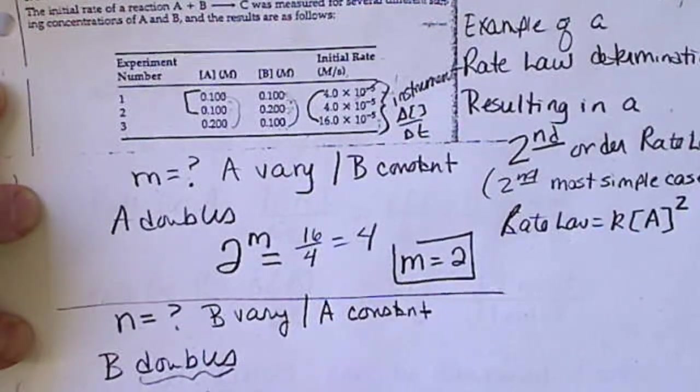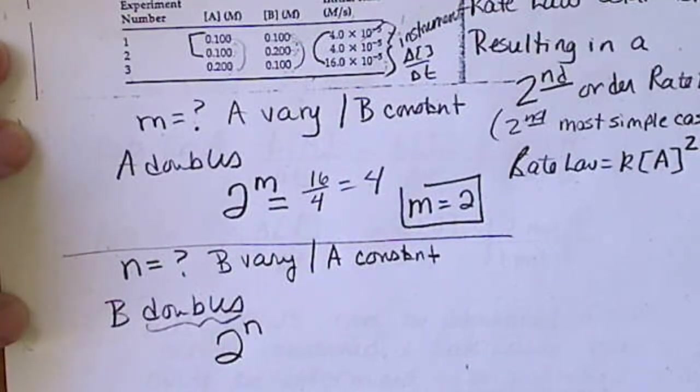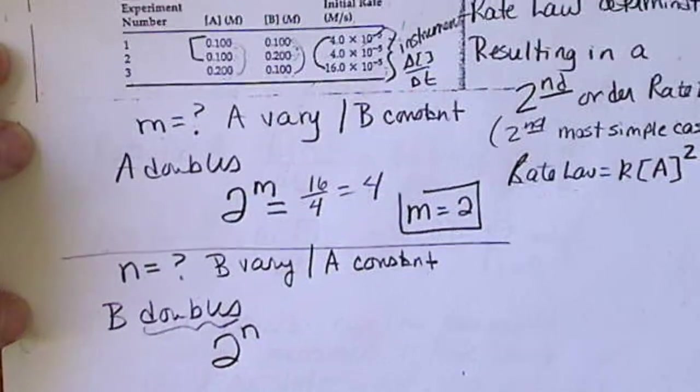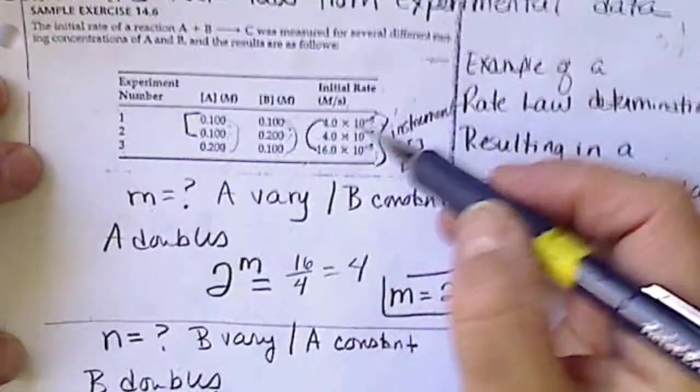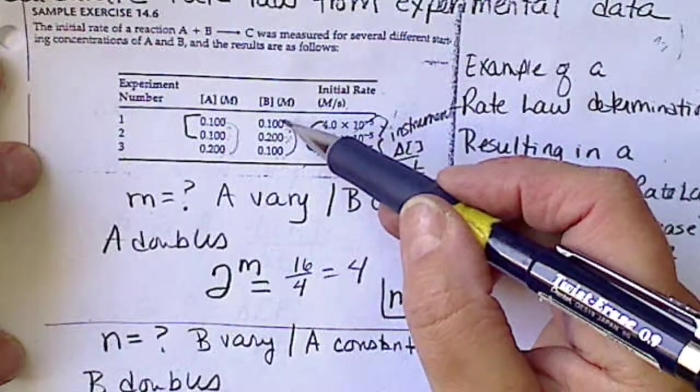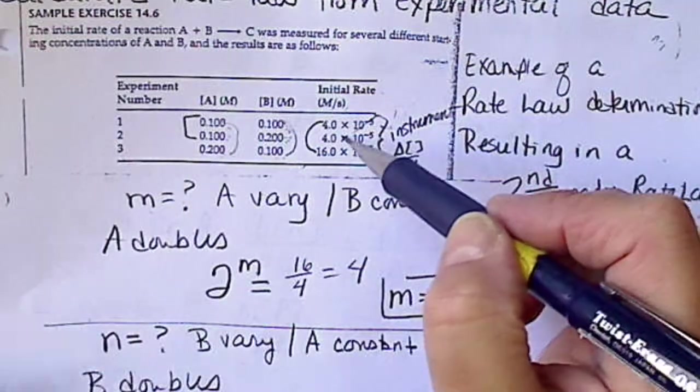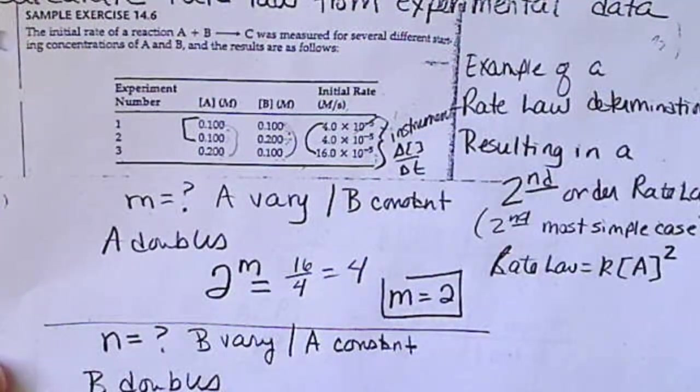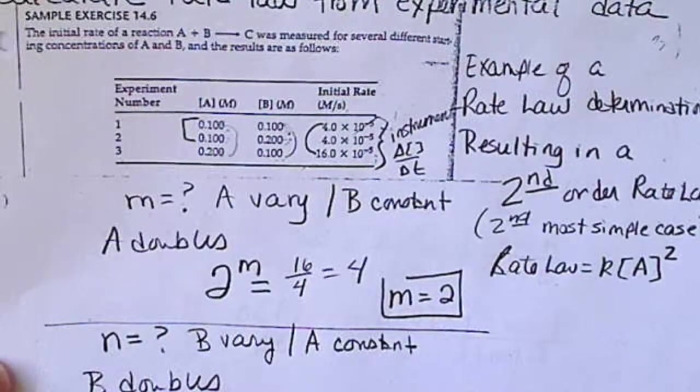That word doubling again means I'm going to put a 2. Now, I'm looking for the power on B, reactant B, so that's N. Now, I'm going to see what happens to the rate. When I double B and keep A the same, the rate does not change. So, we get the number 1.